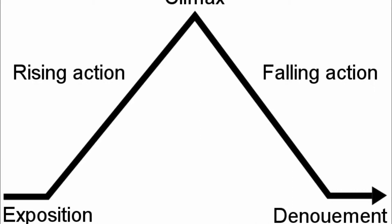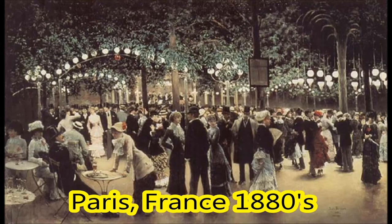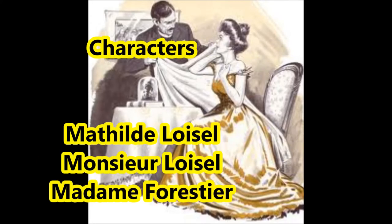Next, let's look at the setting of the story. The setting of The Diamond Necklace takes place in Paris, France, in the 1880s. The characters of the story are: starting with the protagonist, Mathilde Loisel; her husband, Monsieur Loisel; and her rich friend, Madame Forrestier.